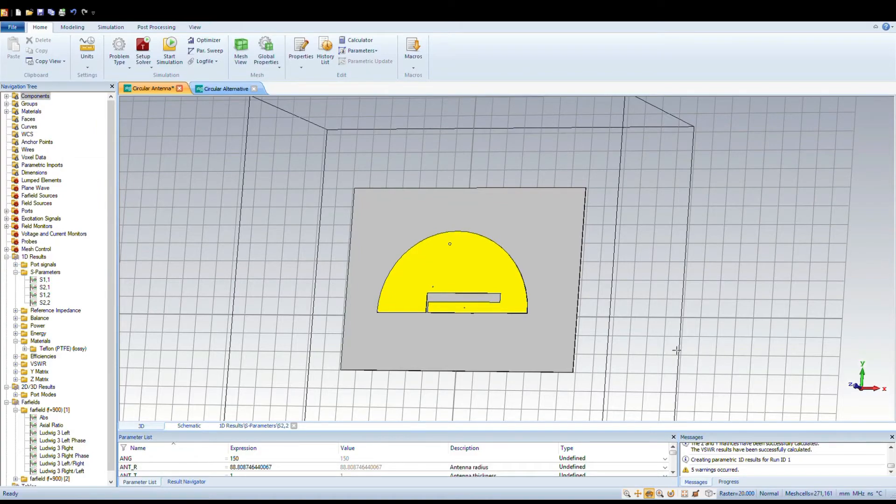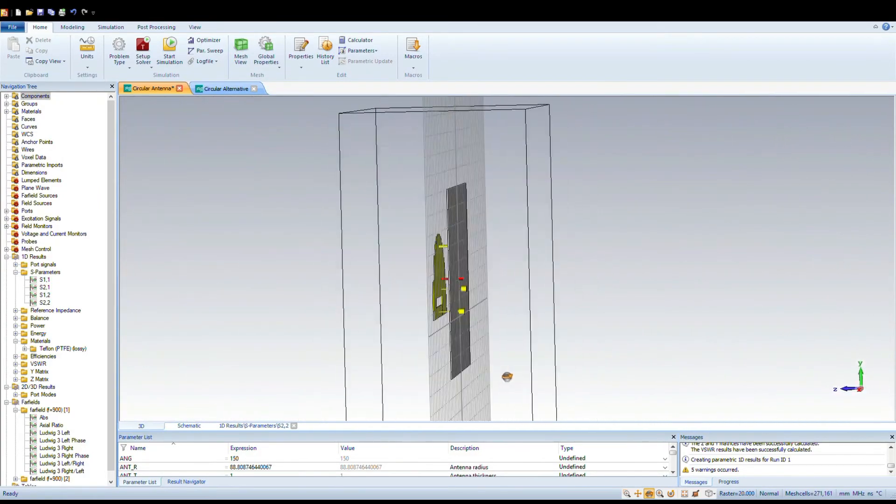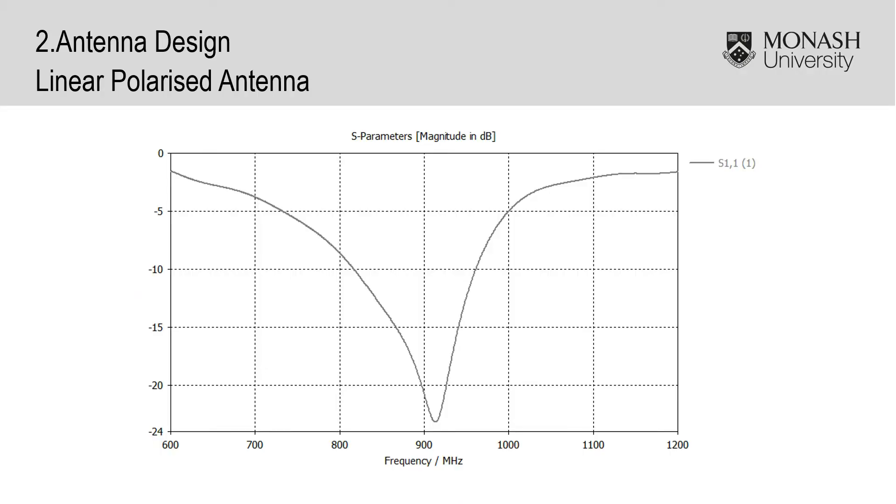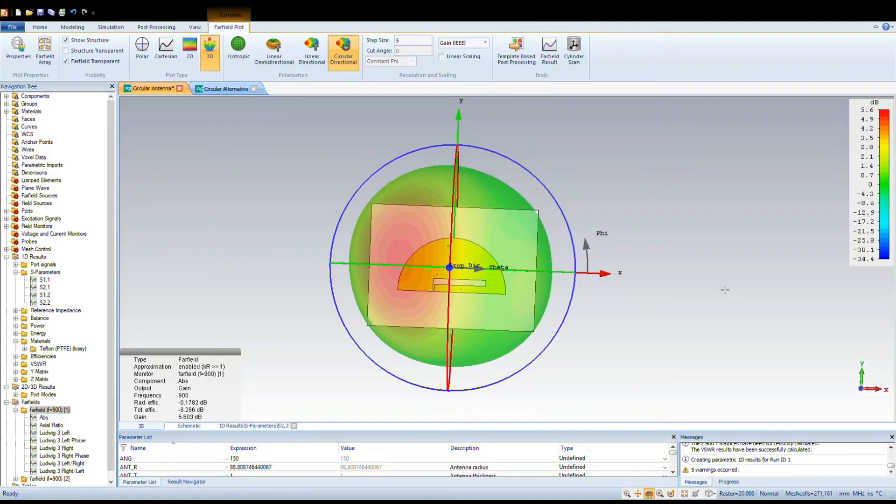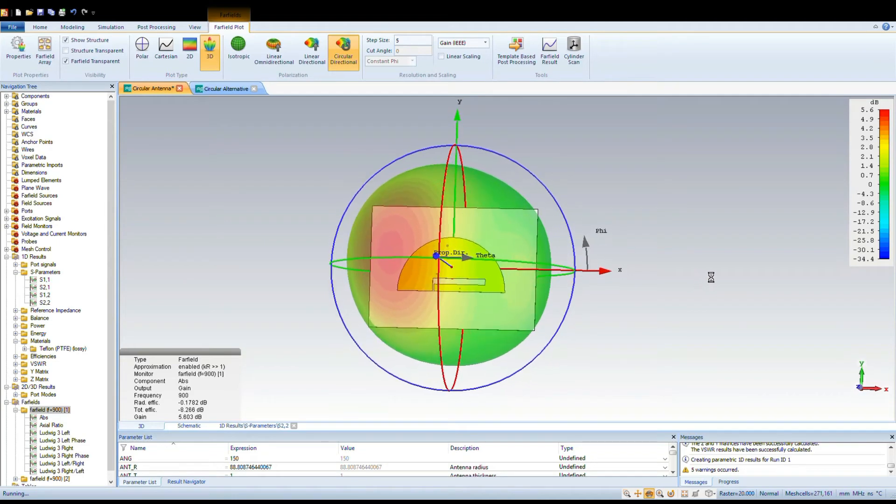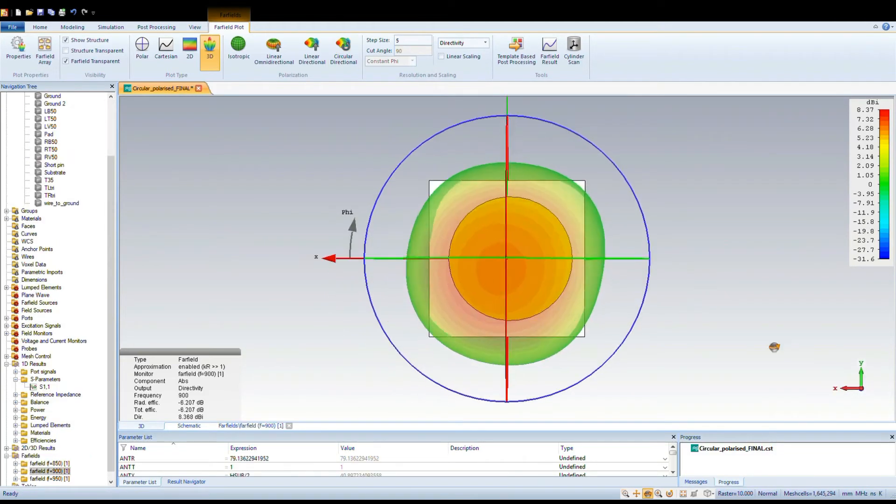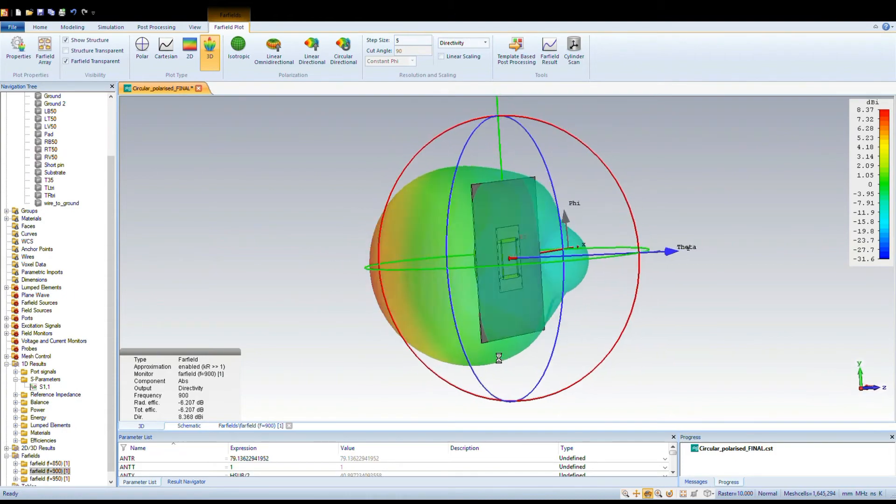We tried to use the same semicircular patch for the circular polarized antenna. Simulation results showed that S11 was satisfactory. However, the radiation pattern was not perpendicular to the antenna, so the design was discarded. A simpler circular antenna was used as it was symmetrical.